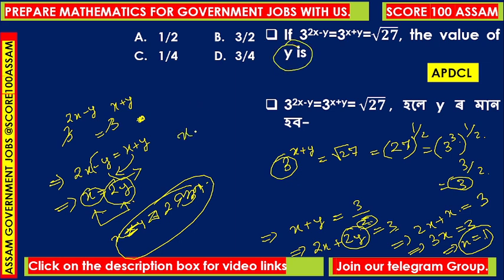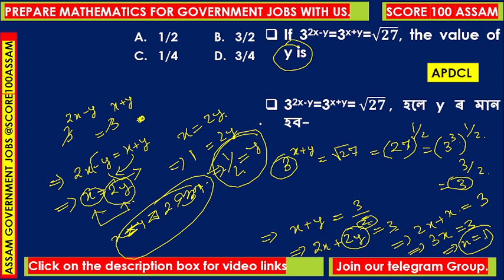We found that x equals twice y. Since x = 1, we have twice y = 1, so y equals 1 divided by 2, which is one-half. The value of y is half. That corresponds to Option A, which is our correct option.